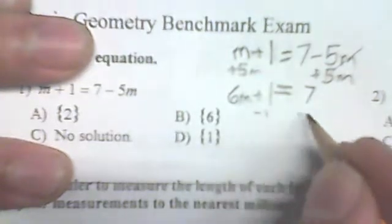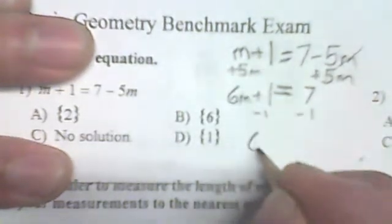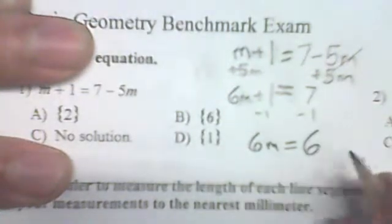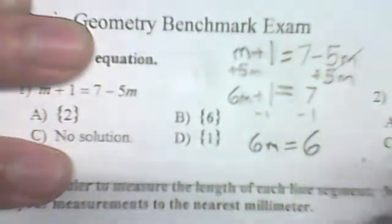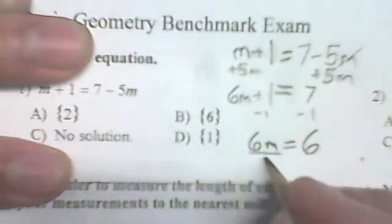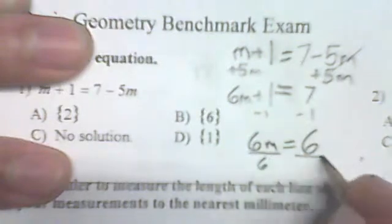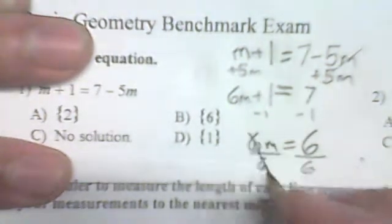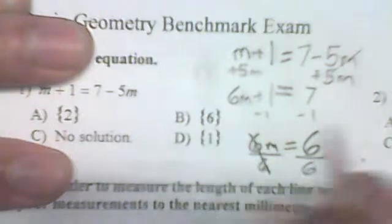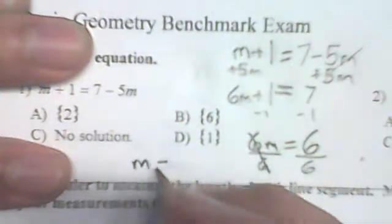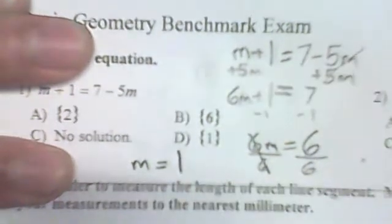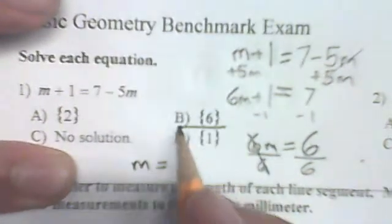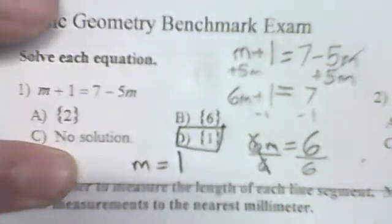Then we take away 1 from both sides, so 6m equals 6. If I divide both sides by 6, the 6s cancel and we get m equals 1.